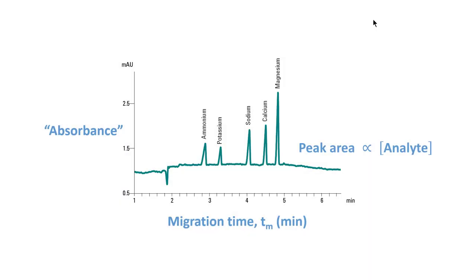Now that we have learned about the migration time and factors affecting it, let's take a look at two other factors closely related to the detection methods. First, we have the absorbance on the y-axis of this electropherogram. The detector we use in this experiment is very similar to the UV-Vis detector commonly used in HPLC. In CE, a typical peak may have a maximum absorbance of 2 mAU, while in HPLC, a typical peak may have a maximum absorbance of about 200 mAU. In addition, we have the peak area, or more accurately speaking, the corrected peak area, which is directly proportional to the concentration of individual analytes.